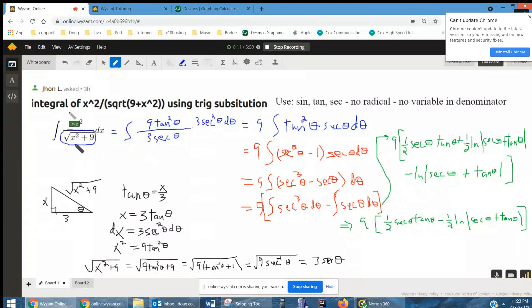But we want that to end up being one of the sides of a right triangle. And when you use trig substitution, you want to use either sine, tangent, or secant.